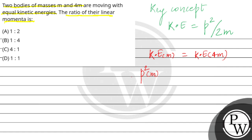And for kinetic energy for mass 4m, we can write p squared for mass 4m divided by 2 times 4m.